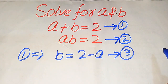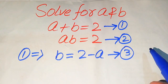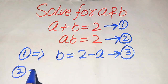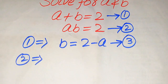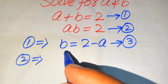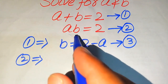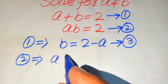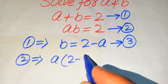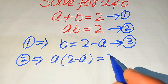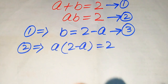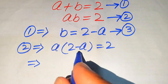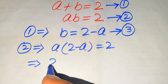Next, we substitute this value of b into equation number 2. Equation number 2 then becomes a times b, and replacing b with 2 minus a gives us a times (2 minus a) equals 2.